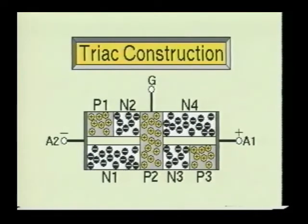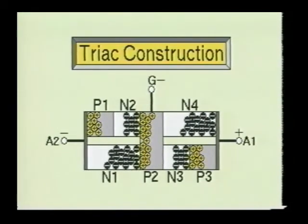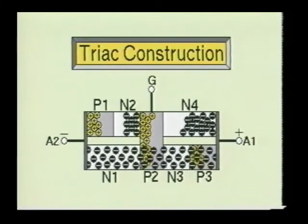Now suppose we make A2 negative with respect to A1, and the gate is pulsed with a negative signal. The PN junction between N3 and P3 will become forward biased. At the same time, the PN junction between N3 and P2 will become reverse biased. As this occurs, the PN junction between P2 and N1 will become forward biased and allow the minority charge carriers to be pulled through the N3 section. After the minority charge carriers have flowed through the N3 section, they will easily pass through the forward biased junction of P2 and N1, and cause the TRIAC to turn on in the opposite direction.